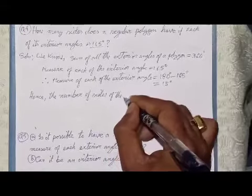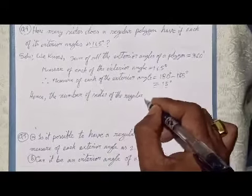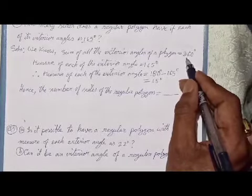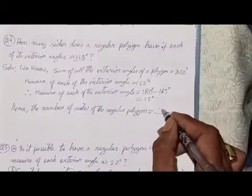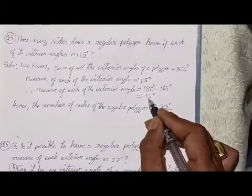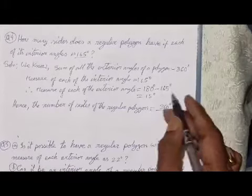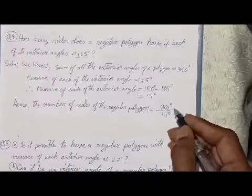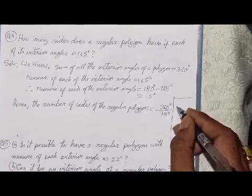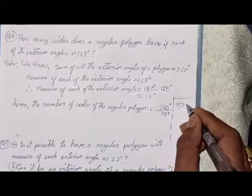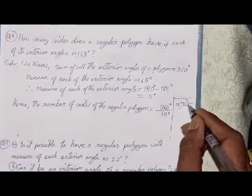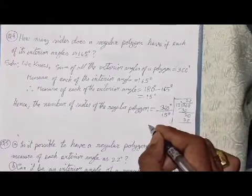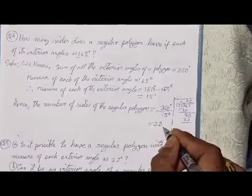Hence, the number of sides of the regular polygon equals the sum of all exterior angles — which is 360 — divided by the measure of each exterior angle, that is 15 degrees. Dividing 360 by 15 gives us 24. So the regular polygon has 24 sides.